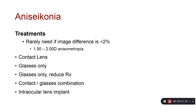Regarding treatments: we rarely need to treat if the image size difference is less than 2%, which corresponds to roughly one to two diopters of anisometropia. Over two diopters is where we start to have problems. Treatment options include glasses only, contact lenses, combinations of contacts and glasses, and modified glasses where we alter the lens curves to reduce magnification.